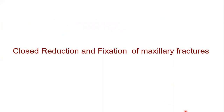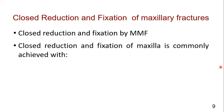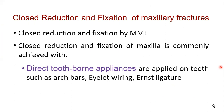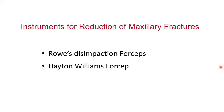For close reduction and fixation of maxillary fractures, maxillomandibular fixation is achieved by direct tooth-borne appliances applied on the teeth, such as arch bars, eyelet wiring, or Ernest ligatures. The second type is indirect tooth-borne appliances, which are made in a laboratory on a cast, such as acrylic occlusal splints — these will be discussed further with mandibular fracture management.